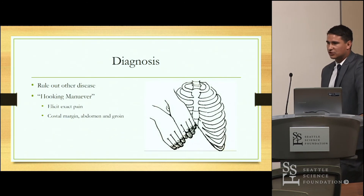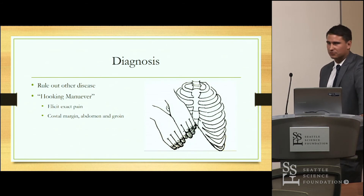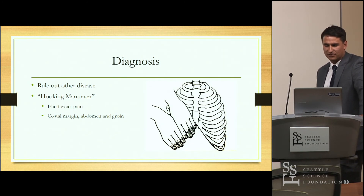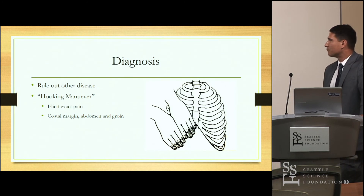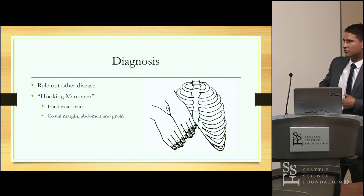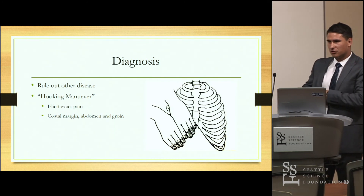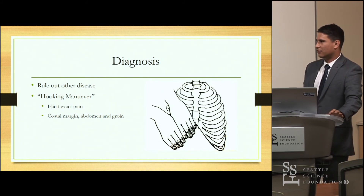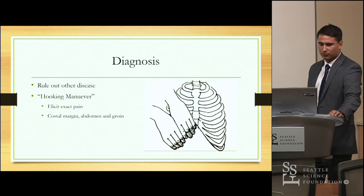Diagnosis is mainly clinical. You can obtain ultrasounds, upper abdominal ultrasounds, CT scans, and x-rays — all of them will come back negative. The hooking maneuver is a physical exam finding that, in the literature, has shown great success in diagnosing 12th rib syndrome. The way it works is that you hook your fingers underneath the costal cartilage, and it will reproduce the exact pain the patient is having. This is diagnostic of 12th rib syndrome.